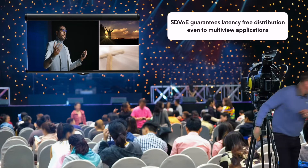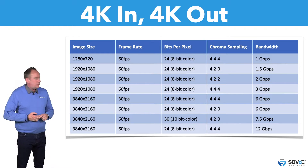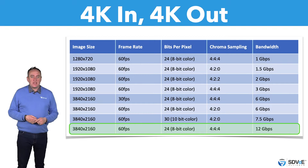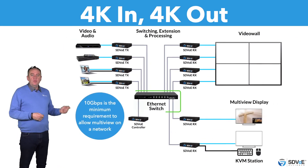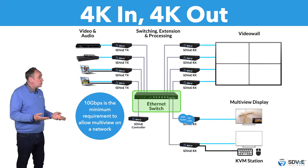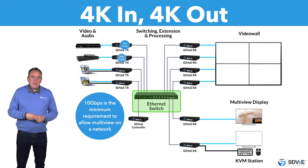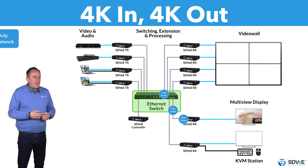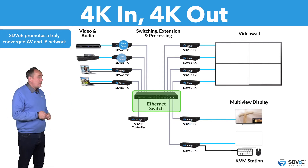SDVoE guarantees latency-free distribution even to multi-view applications by harnessing the power of 10 Gigabit Ethernet. We've used this bandwidth chart many times and there's a really good reason for it — 4K content with zero chroma subsampling requires 12 gigabits per second of bandwidth. Squeezing this into 10 gigabits per second requires such little compression that there's no visual impact on quality, nor is there any identifiable latency to the viewer. 10GIG Ethernet is also the minimum requirement to allow the multi-view application to be used on a network, and it eliminates the need for complex network management to ensure each application has enough bandwidth to operate. SDVoE promotes a truly converged AV and IP network, designed to support every application without any compromise.